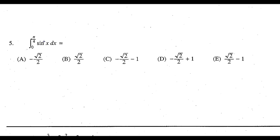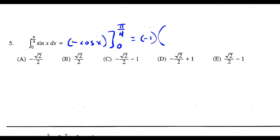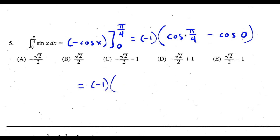For question 5 we use the fundamental theorem of calculus. The antiderivative of sine x is negative cosine x. We evaluate from 0 to pi over 4. Writing the negative 1 on the outside, we compute cosine of pi over 4 minus cosine of 0, which is square root of 2 over 2 minus 1. Distributing the negative 1 gives negative root 2 over 2 plus 1, which corresponds to choice D.